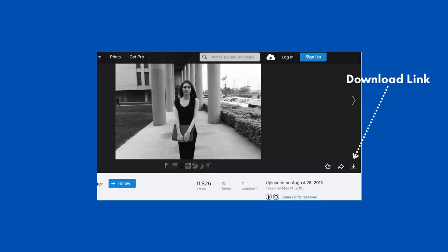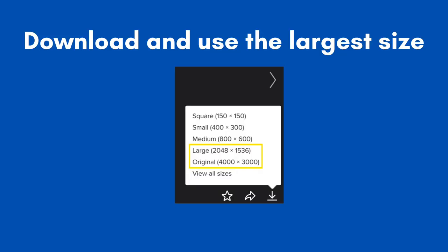Go back to the main page for Flickr and download it by clicking on the download arrow. It will open up a box that asks what size of image you wish to download. Always download the largest size you can, because larger images are easier to resize than smaller ones.